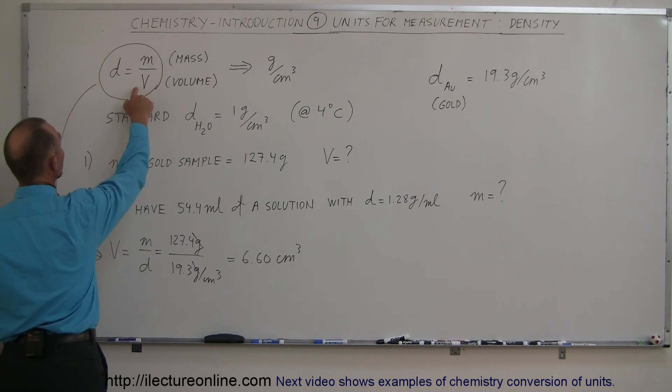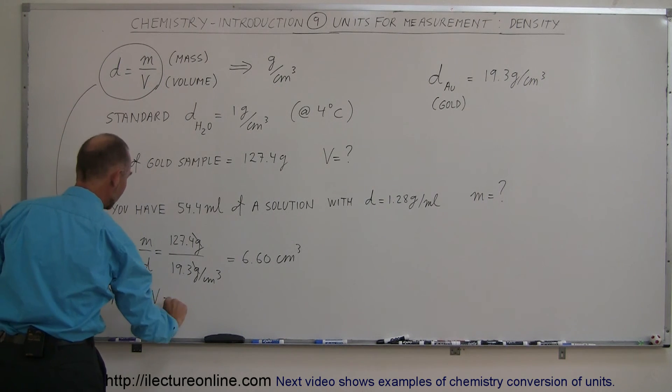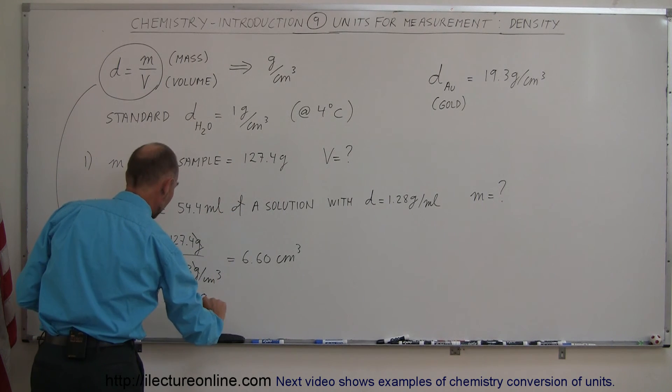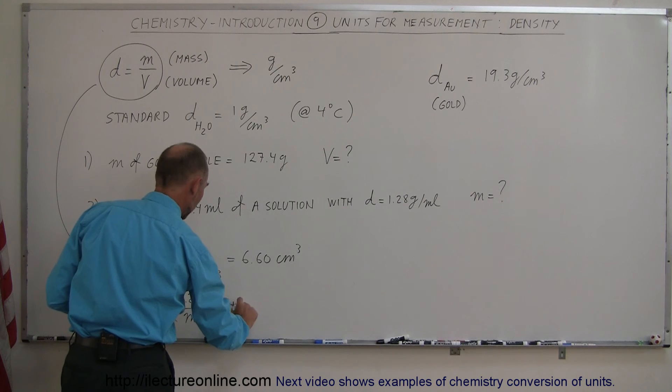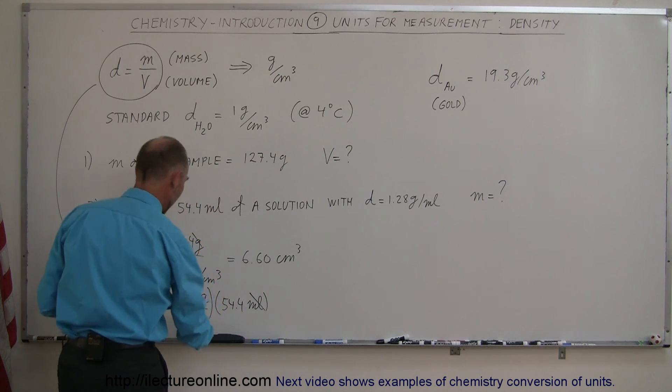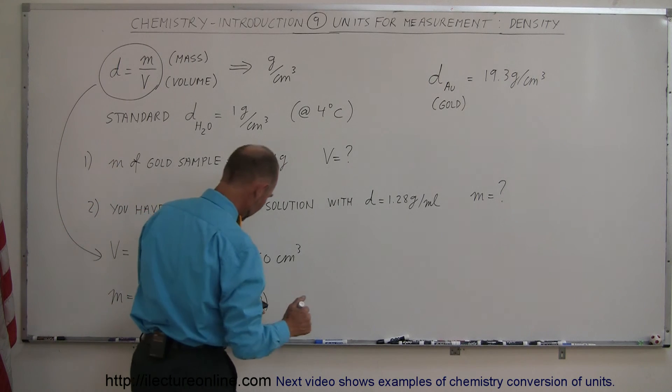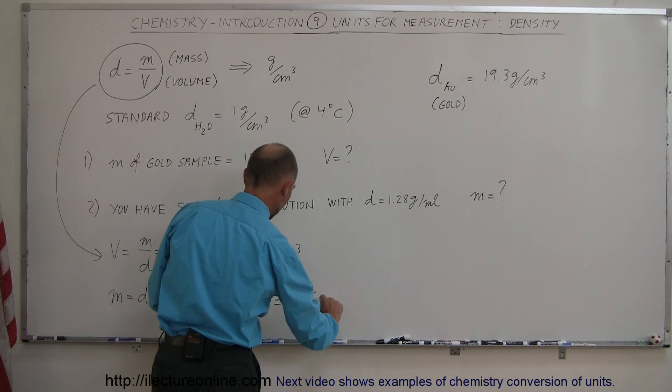We can use our equation again. Cross multiplying, mass equals density times volume. The density is 1.28 grams per milliliter, and we multiply by the volume of 54.4 milliliters. The milliliters cancel out, leaving us with grams. Calculating 54.4 times 1.28, we get 69.6 grams.